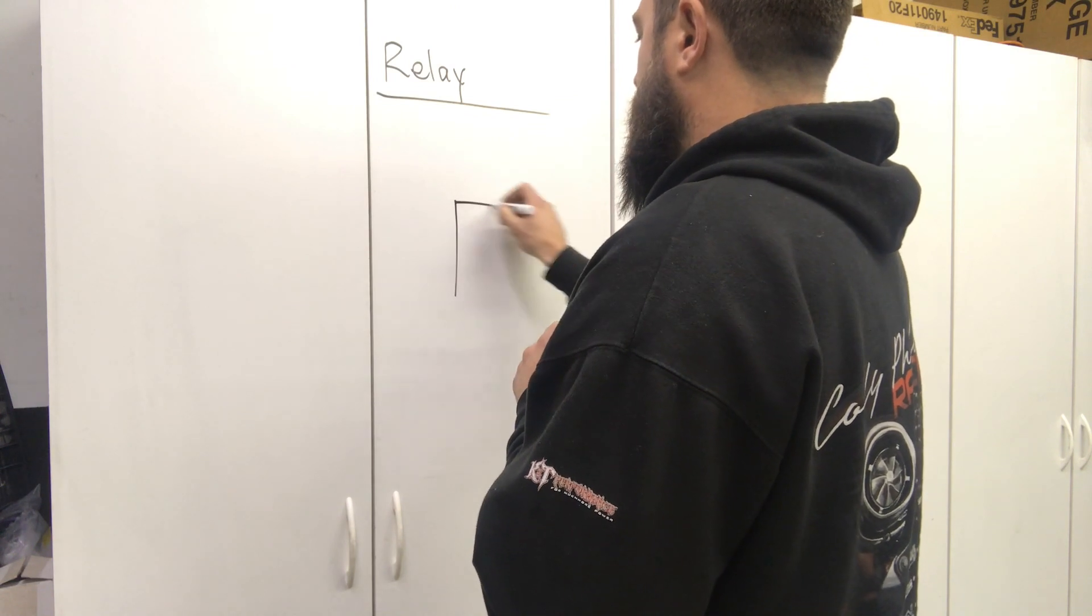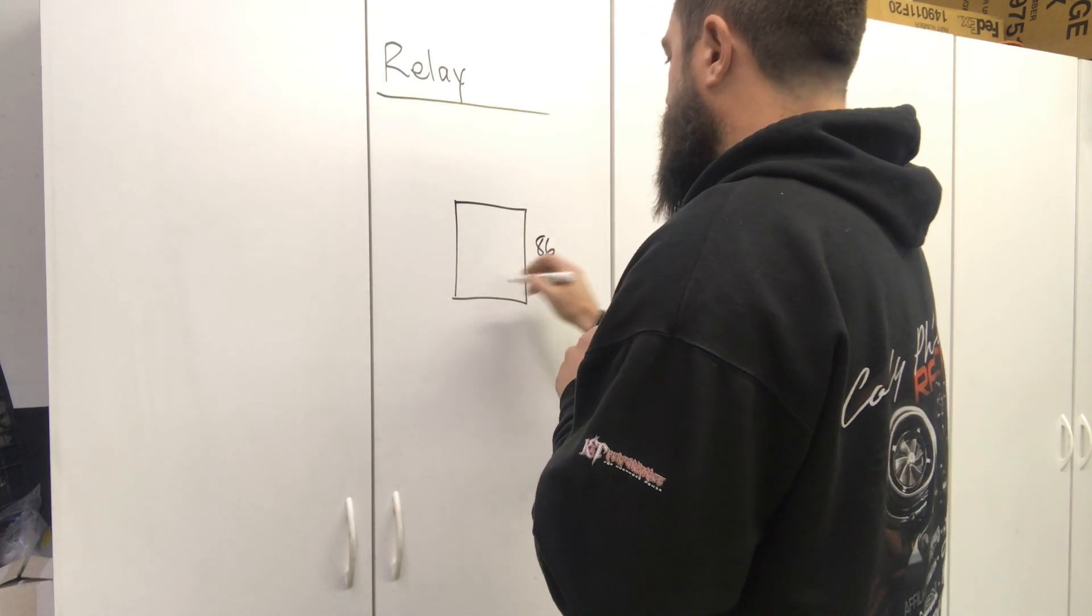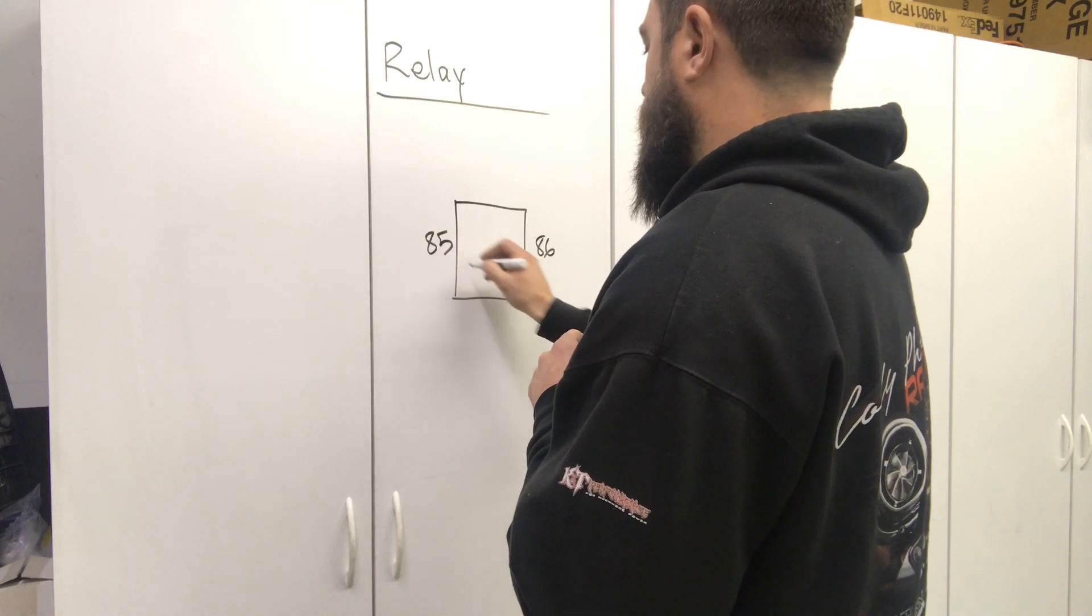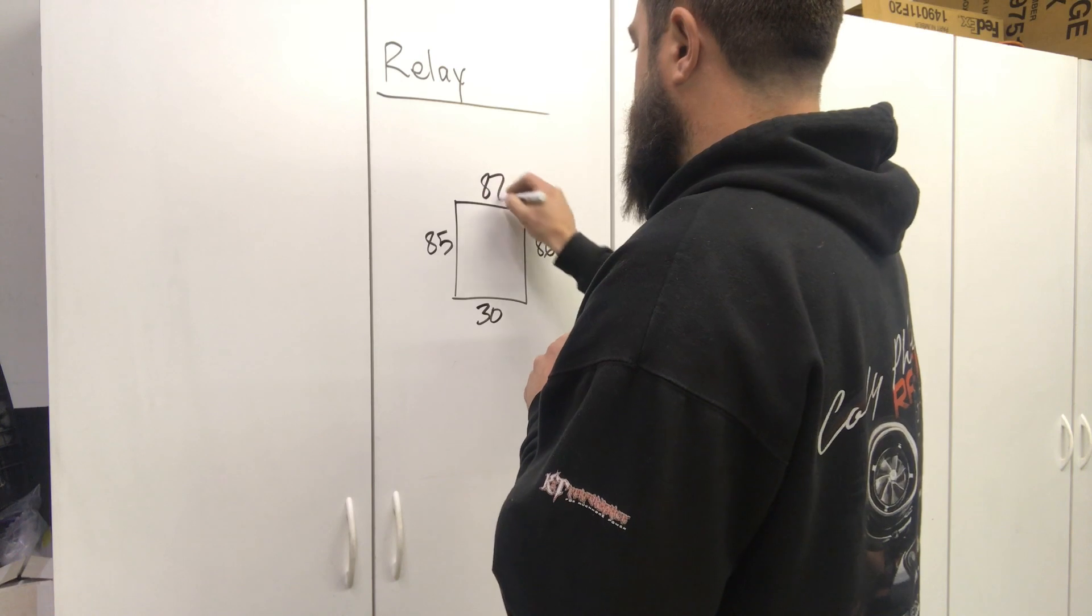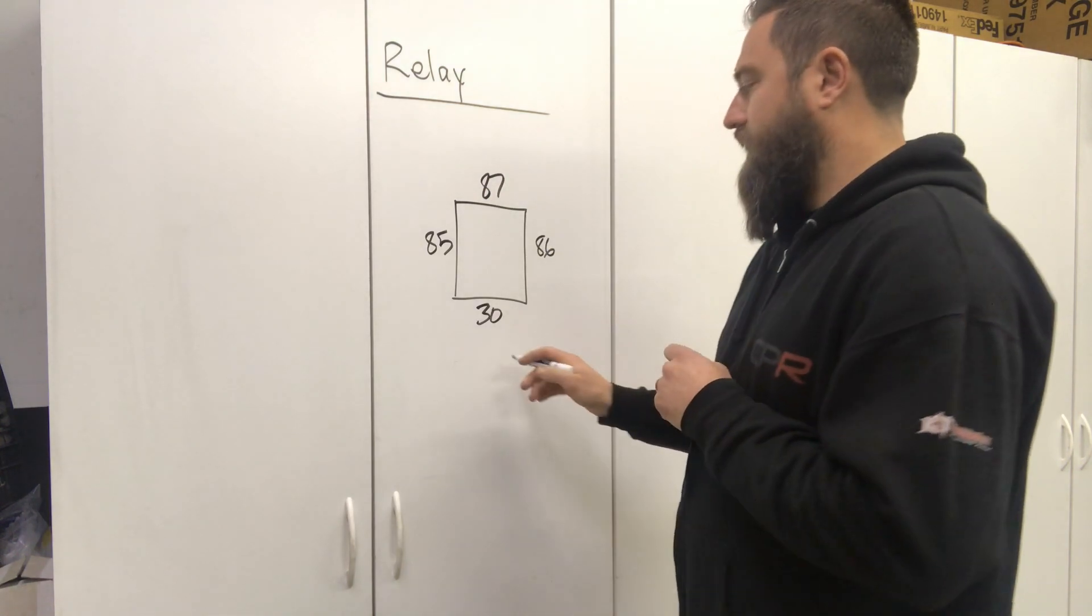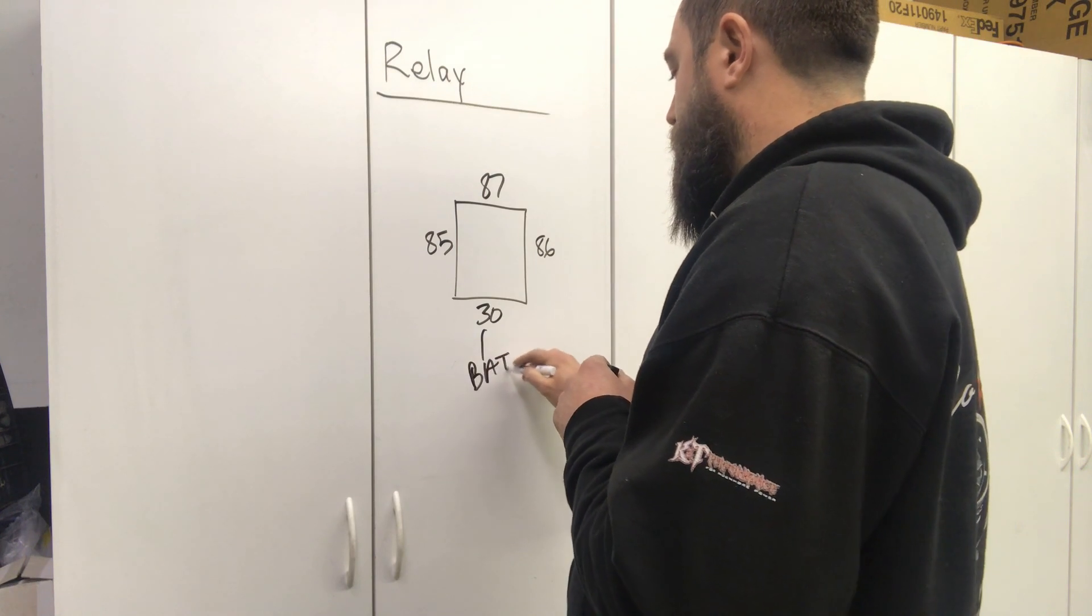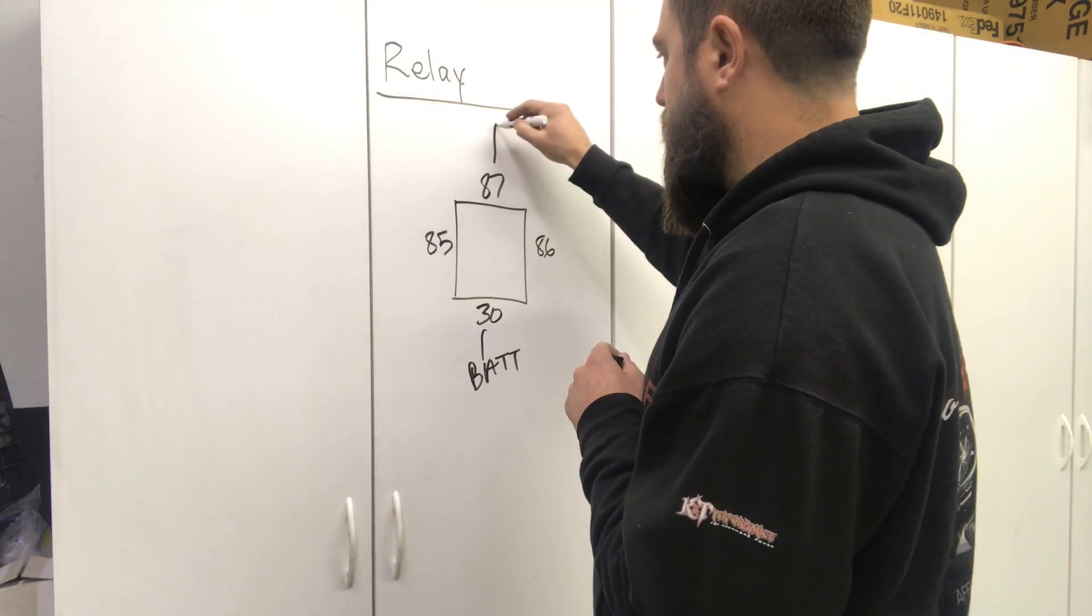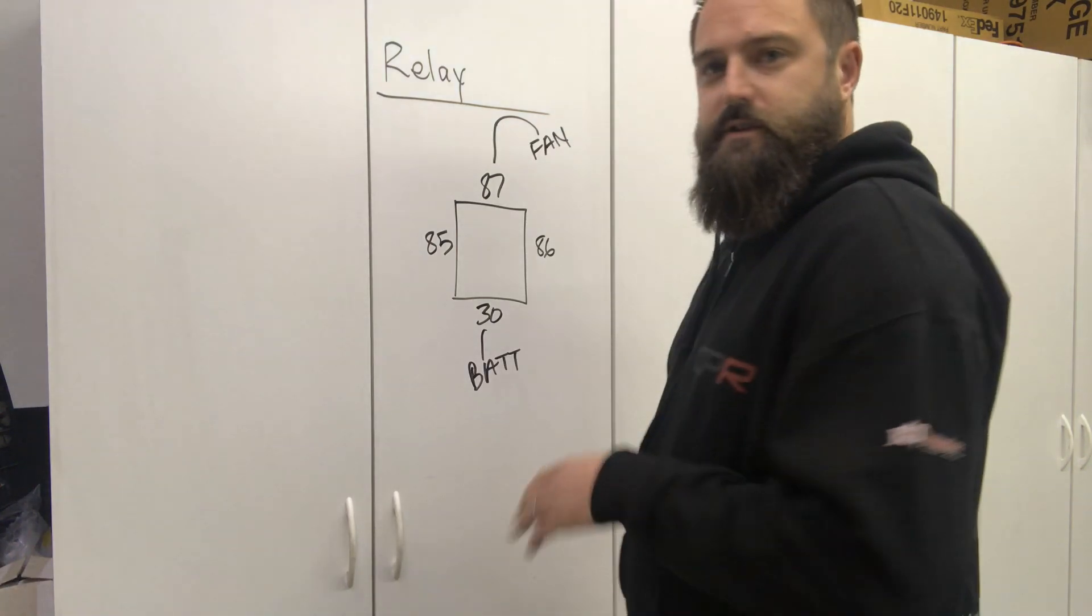In your typical relay, you have two sides of a coil. We can use this to have our battery current available to a device. We're going to call this a fan for a simple demonstration.